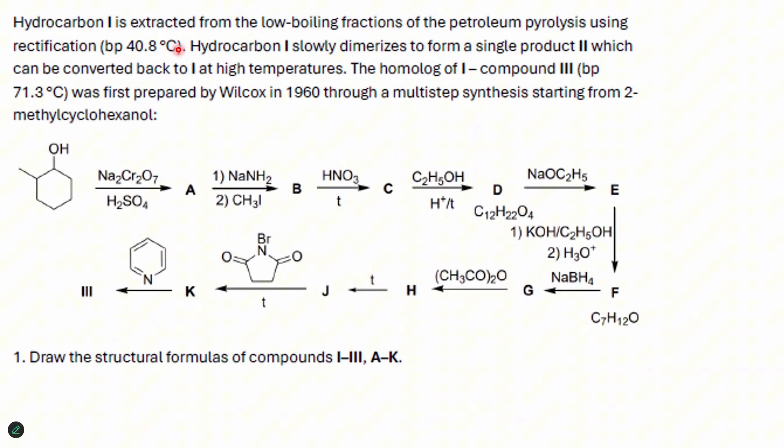It says hydrocarbon one is extracted from low boiling fractions of petroleum pyrolysis using rectification. Hydrocarbon one slowly dimerized to form a single product two, which can be converted back to one at high temperatures. And the homologue of one, compound three, was first prepared by Wilcox in 1960 through a multi-step synthesis starting from two methylcyclohexanol. And here is the synthesis. And they ask us to draw the structure formulas of all ciphered compounds.